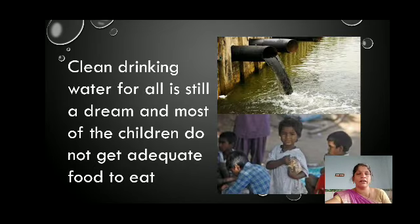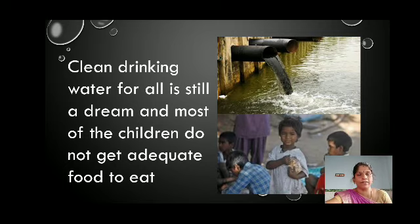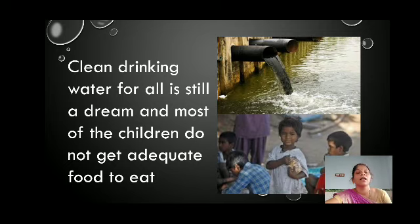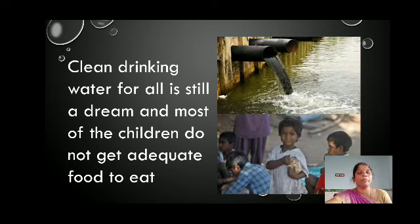The second column points — the challenges we face in our country — show how poor the health situation is despite all the positive developments. With all the first column's positive developments, we are not able to provide proper healthcare facilities to people. This is the paradox. We have a lot of positive points: we produce 15,000 doctors, we are the largest producer of medicines. But we are not providing some basic things to the people. Our country has the money, knowledge and experienced people, but cannot make the necessary healthcare available to all.